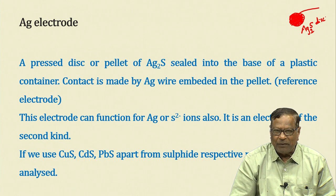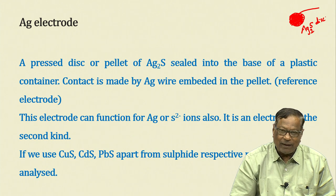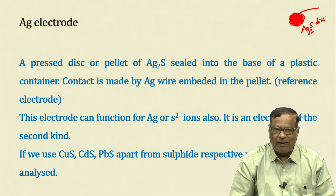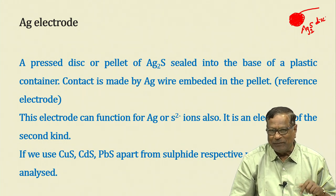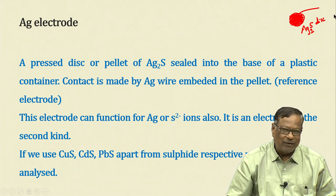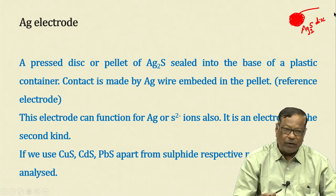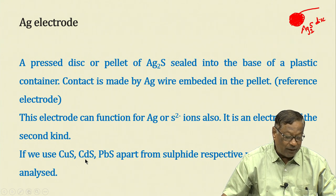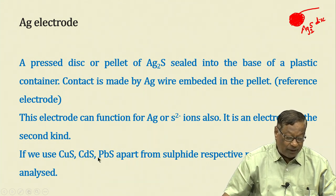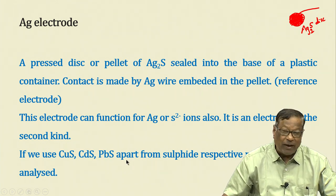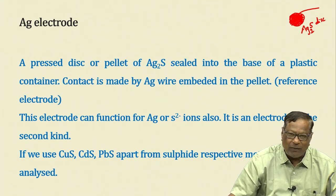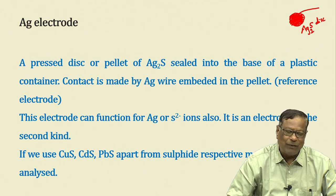Similarly, for cadmium we can use a cadmium sulphide disc. The silver/silver sulphide electrode can be used for both silver and sulphide — it is an electrode of the second kind. We can also use copper sulphide, cadmium sulphide, or lead sulphide. Apart from sulphide, the respective metal ions — copper, cadmium, lead — can also be analyzed, because when ions are in equilibrium, the concentrations of cation and anion are stoichiometrically equivalent.